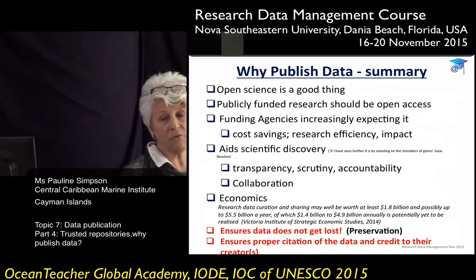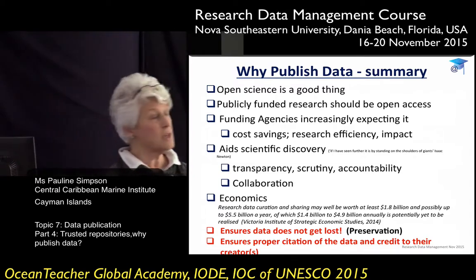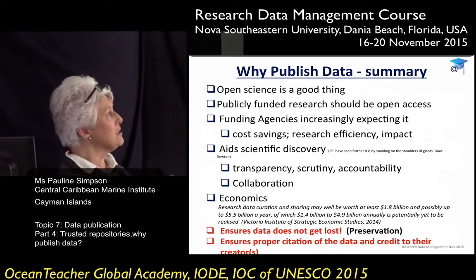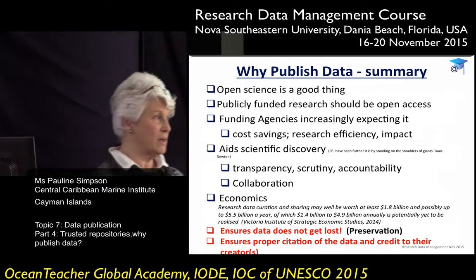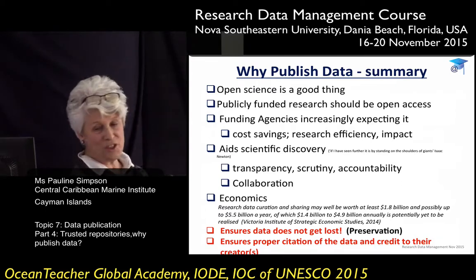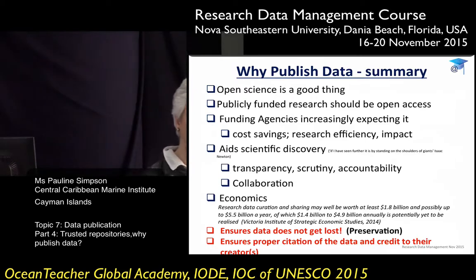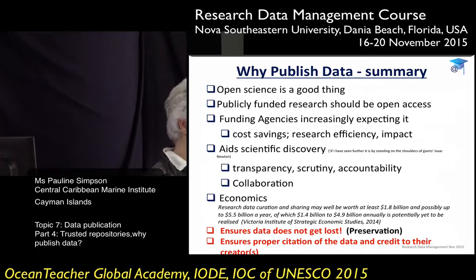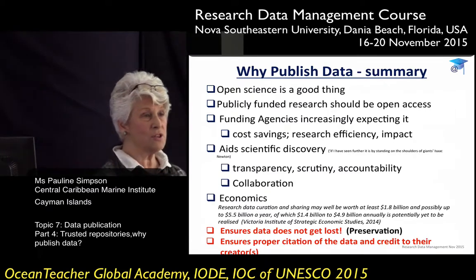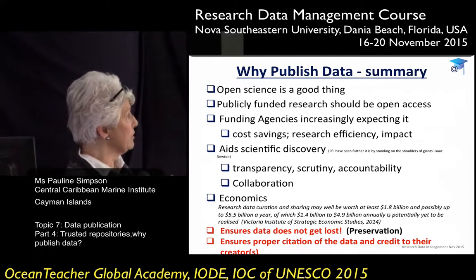Open data aids scientific discovery through transparency — everybody can see what you've done and what the data represents. It allows scrutiny so we can look for errors, and it ensures accountability: you've used the money to get this data, therefore you have to justify how you spent it. And of course there is collaboration — international collaboration is one metric that all researchers now have to include in their performance reviews. Data publication is really going to help researchers be able to put a lot of content down for that.